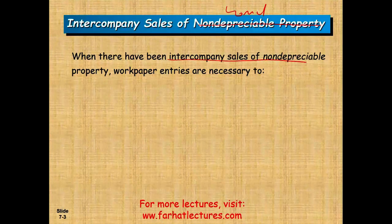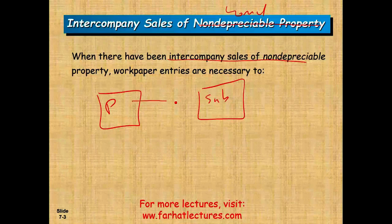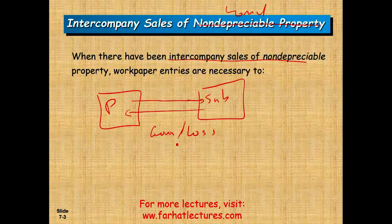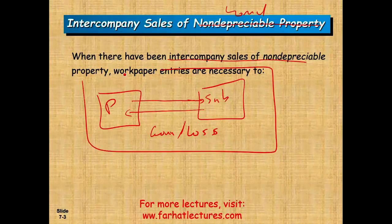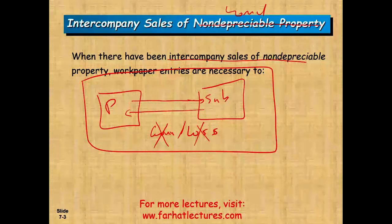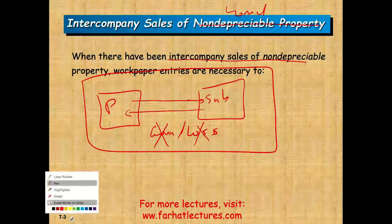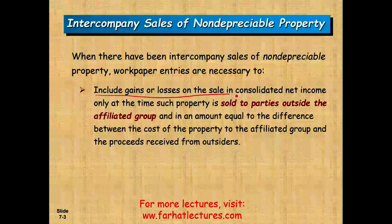What are we discussing? We have a parent company and a subsidiary. The parent company may sell to the sub, or the sub may sell to the parent. When there's a sale, we might have a gain or a loss. When we consolidate — when we prepare the consolidated financial statement — gains and losses need to be eliminated because they are intercompany, and we have to bring the asset back to its original basis.